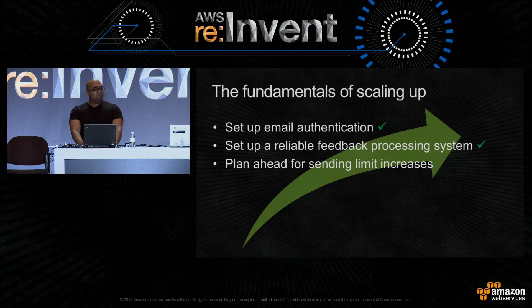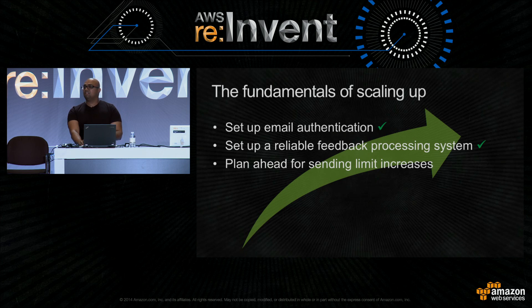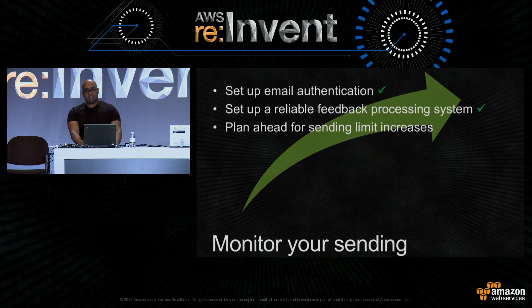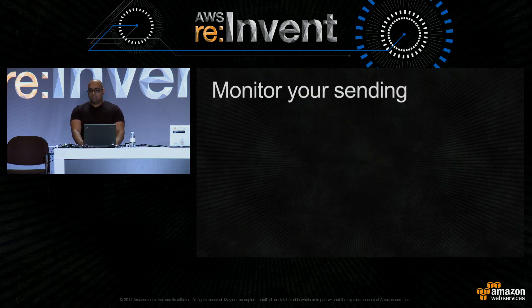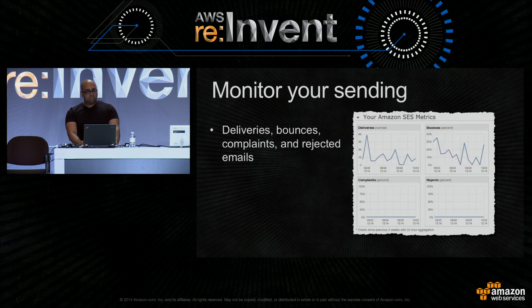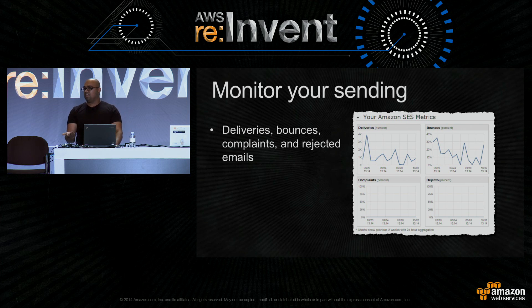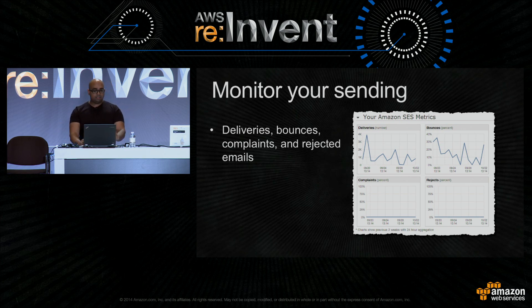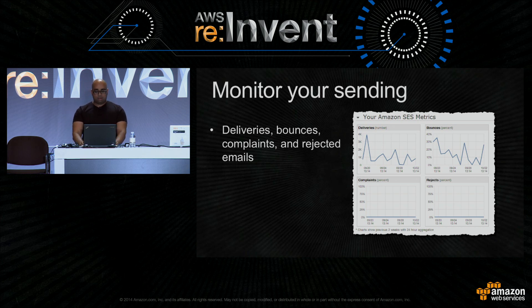The next step is to plan ahead for sending limit increases. The first step in knowing your limits and increasing them with SES is to monitor your sending. We actually offer four different metrics right now: deliveries, bounces, complaints, and rejected emails — which are emails that SES will not deliver. We display those graphically in the console, but you can also pull them through our APIs and consume them programmatically.